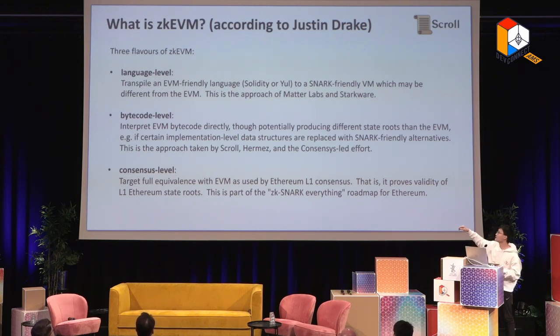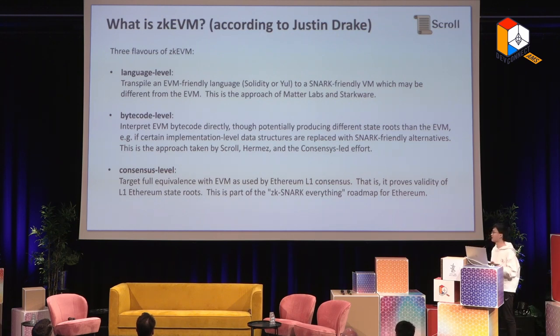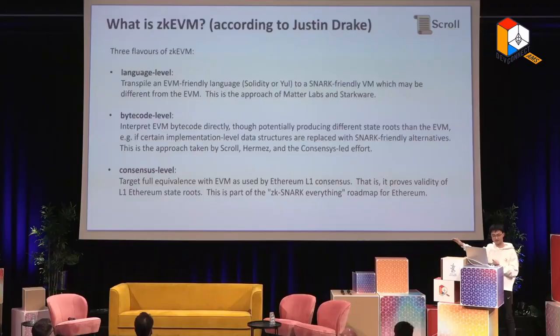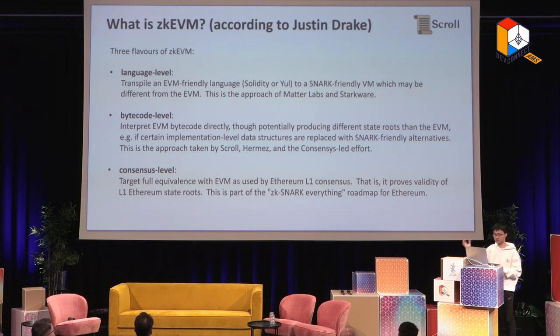First, there is the language level where you transpile some EVM-friendly language to a ZK-friendly virtual machine. Second, at the bytecode level, you are interpreting EVM bytecode directly — you are building something EVM equivalent. The trade-off is that you might have a different implementation for storage and a different state root, because the Merkle Patricia tree and RLP encoding are not defined in the EVM yellow paper. The third and end goal is the consensus level, which is nearly Ethereum equivalent — you take one existing Ethereum block and generate proof for it, proving all existing things on Ethereum.